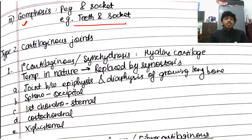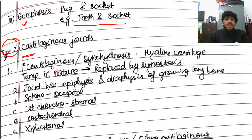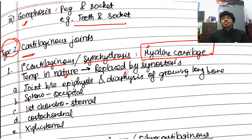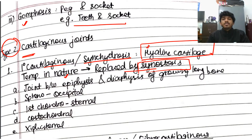Cartilaginous joints are the second type and have two categories: primary and secondary. Primary cartilaginous joints are called synchondroses, made up of hyaline cartilage. They are temporary and eventually replaced by synostosis — that is, they ossify. The example is the joint between the epiphysis and diaphysis.